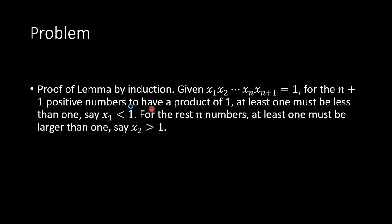We prove this lemma by induction. Given m+1 numbers x1, x2, ..., x(n+1), if their product is 1, we want to show their average is larger than or equal to 1. For m+1 positive numbers to have a product of 1, not all of them can be larger than 1, otherwise the product cannot equal 1.